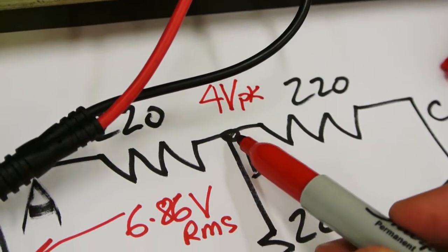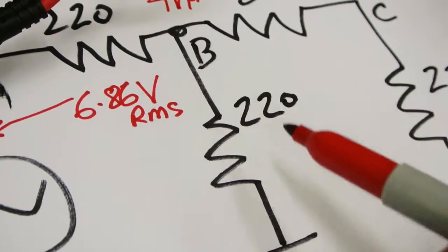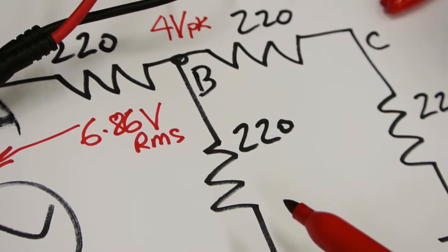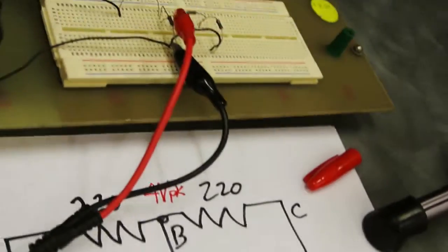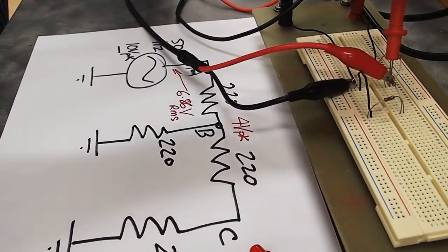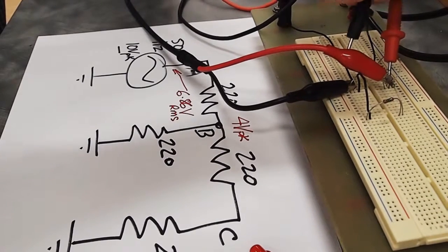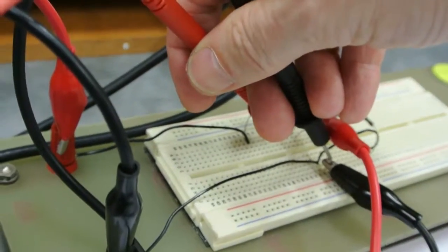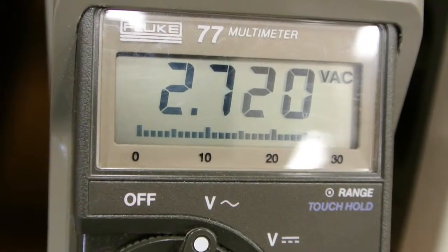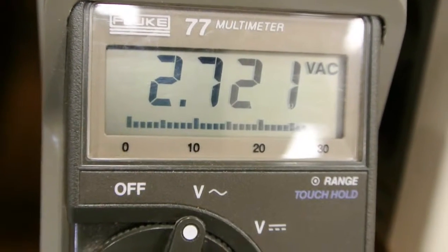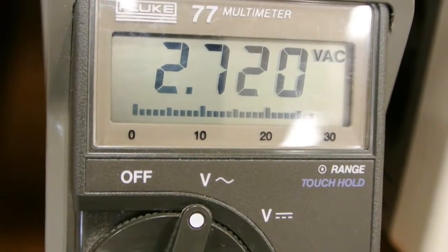And then we need to get the Fluke multimeter and measure across that 220 ohm resistor and confirm that we do in fact have the correct RMS voltage across that. So I've got the multimeter probe onto the resistor terminals now. We come back to the Fluke and we see that we've got 2.72 volts. A little bit lower than where we would have liked it to have been. Let's record that.